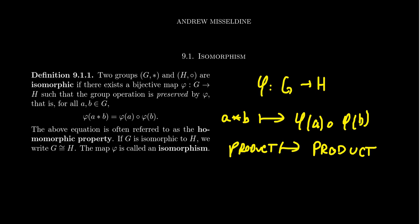The operation could be very different — the star operation in G and the circle operation in H might not seem related at all. But an isomorphism will preserve the operation via this homomorphic property, by sending a product to a product, where 'product' might change based upon the two groups we're in.